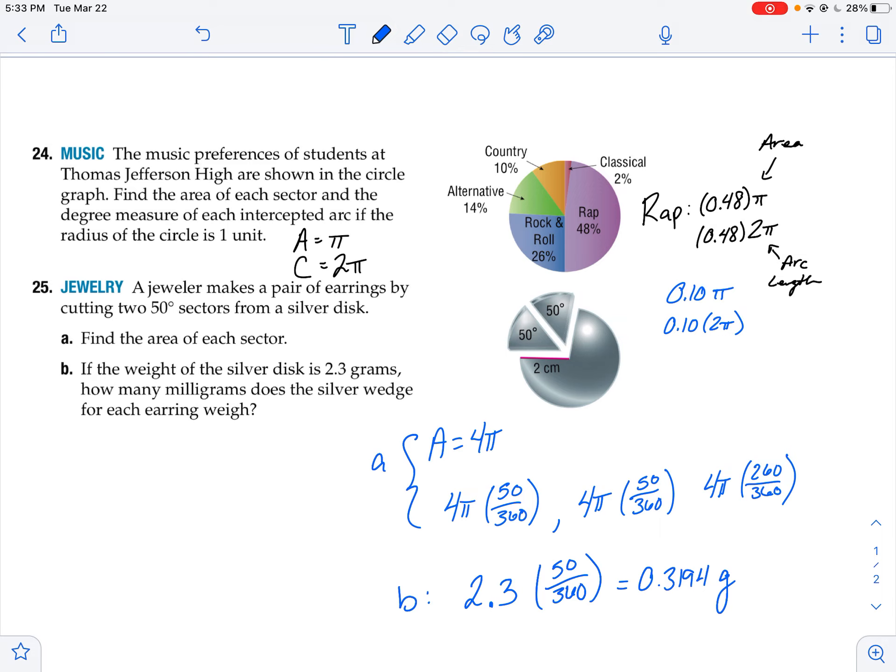And then you'd want to convert that to milligrams. So I would take that number there. If I know my conversions, then I can just move that decimal place over to 0.3194. If I move that over three spaces, that would be 319.4 milligrams for each one. Let me know what questions you have, and I will see you soon.